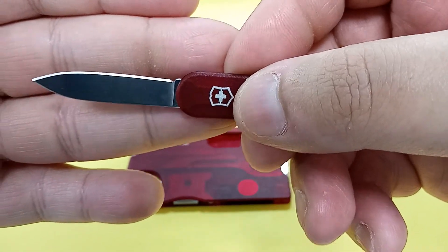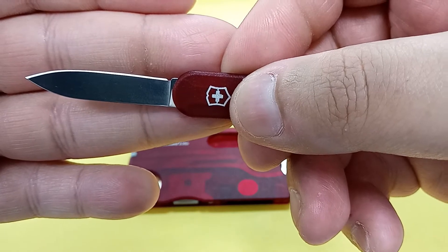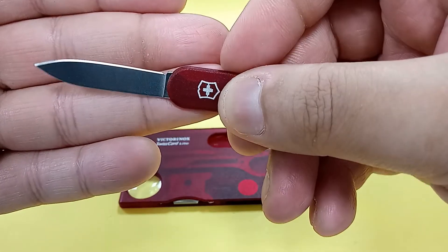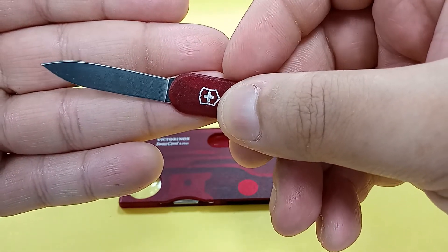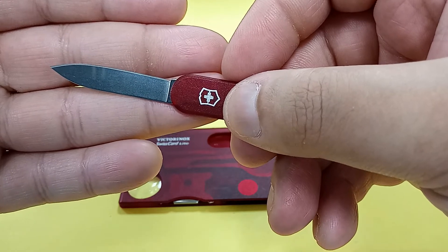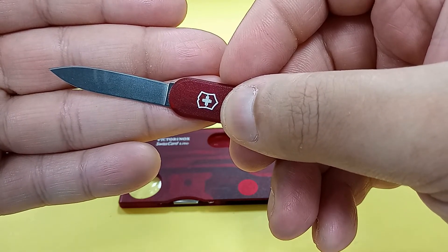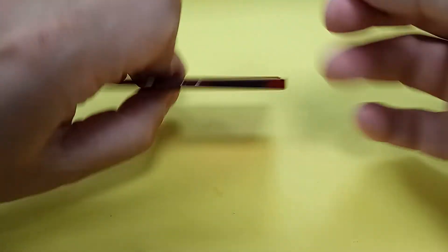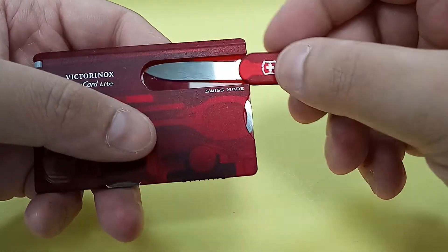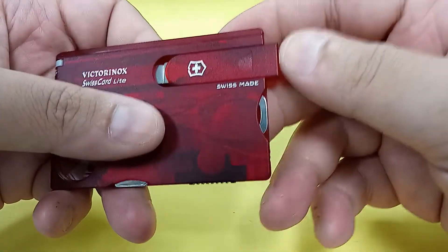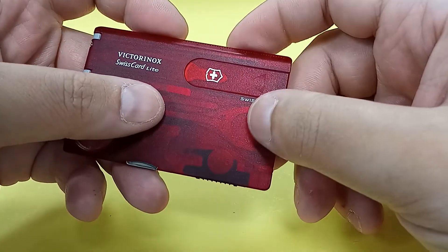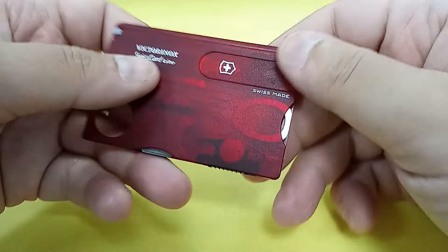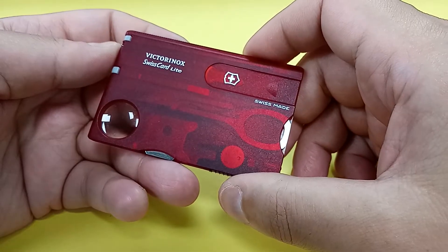You do have to be careful because as you can see, it is a little easy for your fingers to slip onto the cutting edge. Can you use it as a letter opener? Well yes, but it's not ideal. And this is definitely a knife. Let's just put that back in. And it does slide in securely.